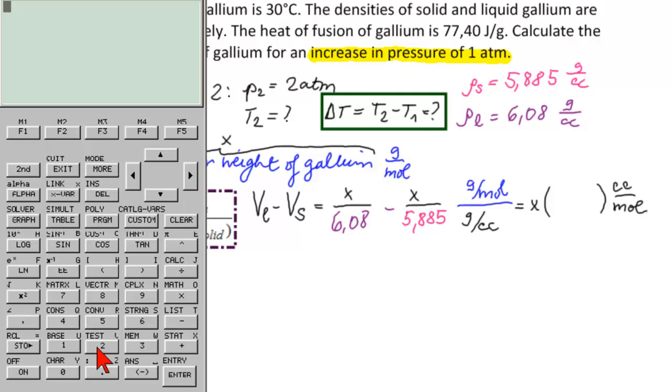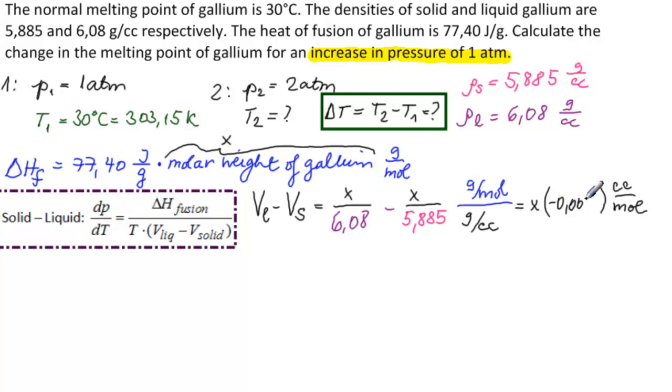Here's our calculator. We have 1 divided by 6.08 minus 1 divided by 5.885, and that equals minus 0.00545. Let's store that somewhere, store it in A. Minus 0.00545.